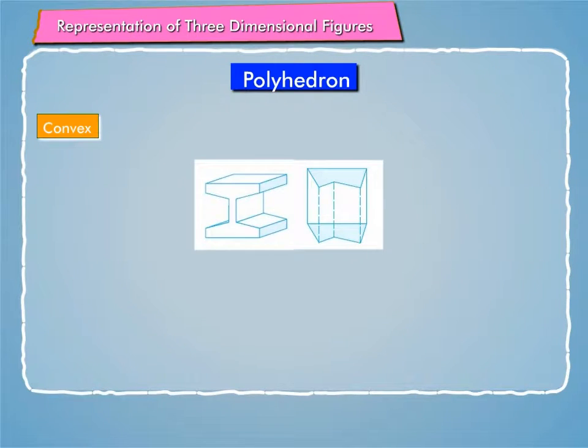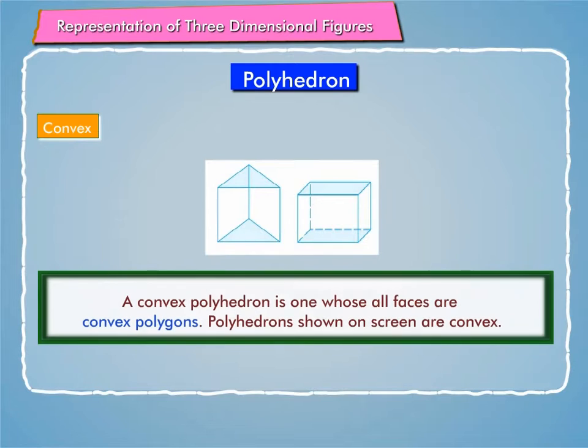Polyhedrons shown on screen are not convex. A convex polyhedron is one whose all faces are convex polygons. Polyhedrons shown on screen are convex.